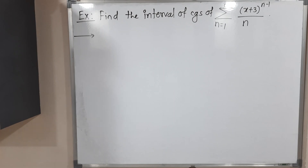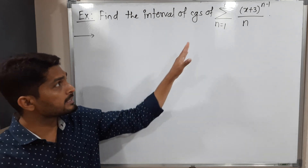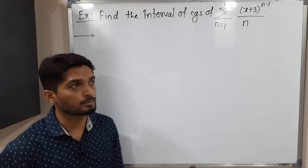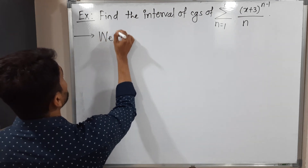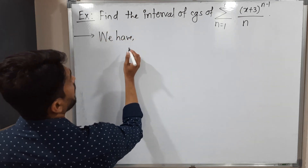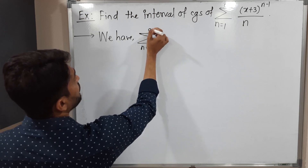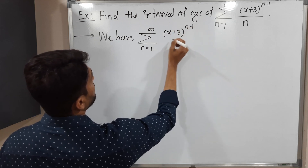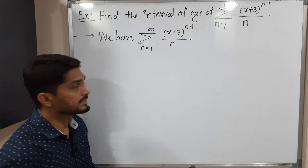Hi everyone. In this video we are going to find the interval of convergence of a power series. So let us write that power series first, then we will discuss its interval of convergence. We have summation n running from 1 to infinity of (x plus 3) raised to n minus 1, upon n. So this is the power series we have.